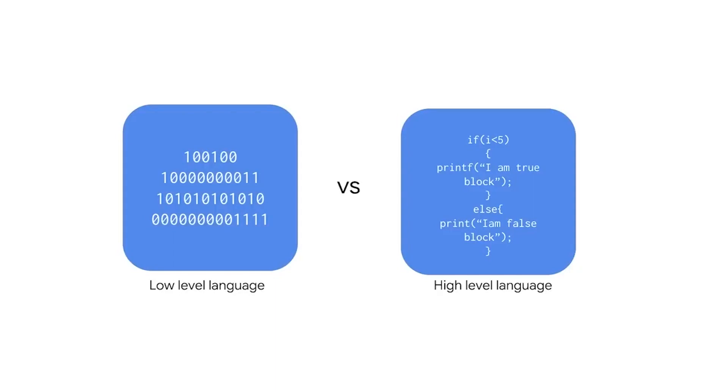Modern programming languages use syntax that's much more familiar to humans. These languages are known as high-level languages. And this brings us back to Python. Python is a high-level language that's versatile and easy to learn. Simply put, Python is friendly.